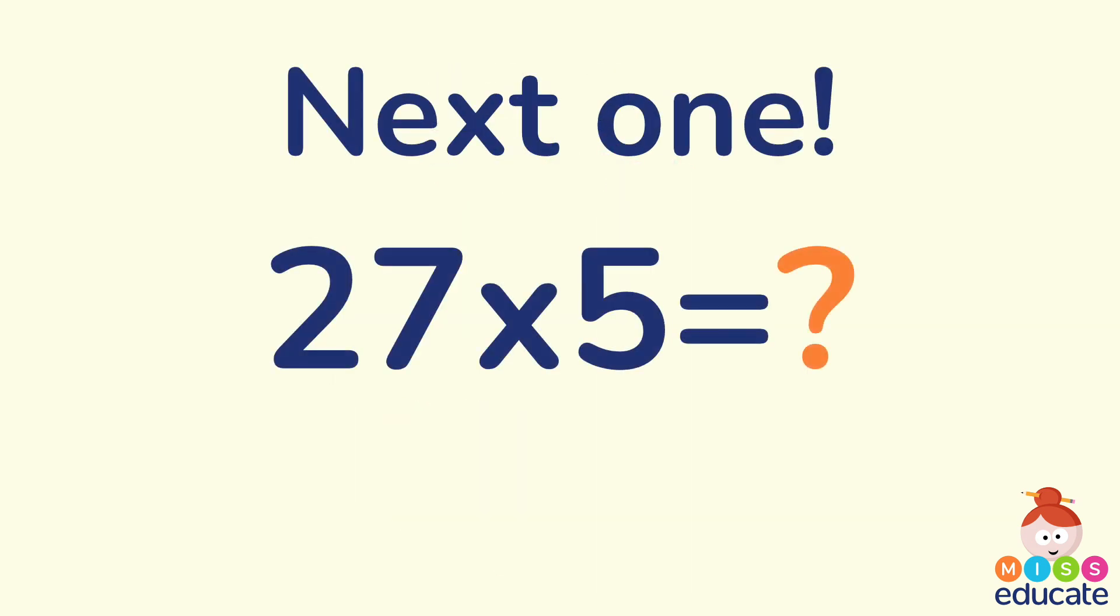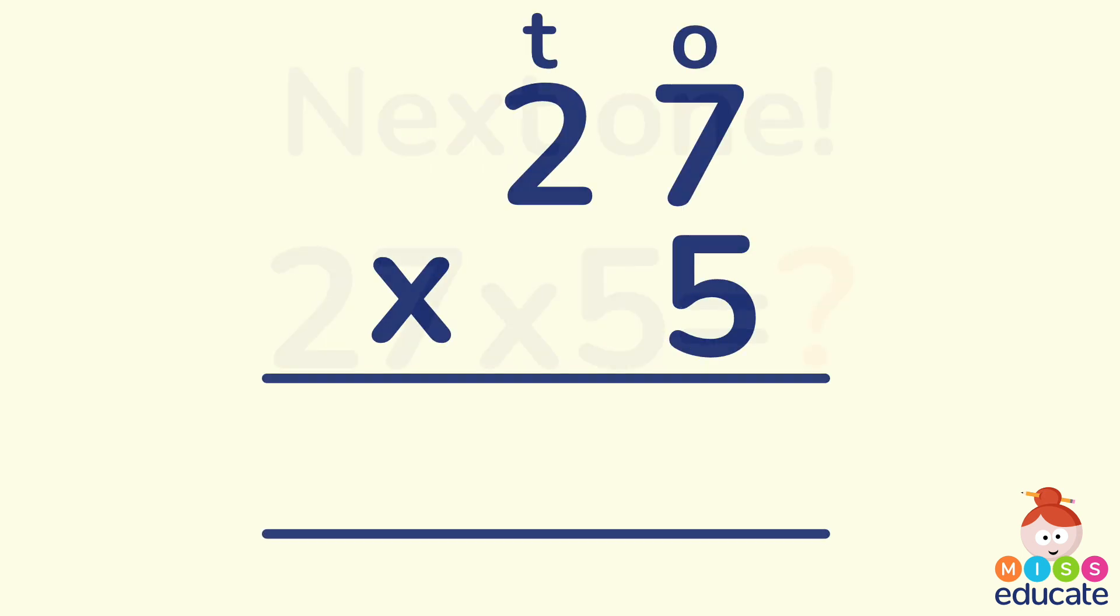Let's look at the next one. This one's slightly different and I'll show you why when we get to the answer. 27 times by 5. Lay it out in the columns. Multiply the ones first and we get 7 times 5 which is 35. Oh but hang on a minute. We can't put 35 in there. So what do we do?